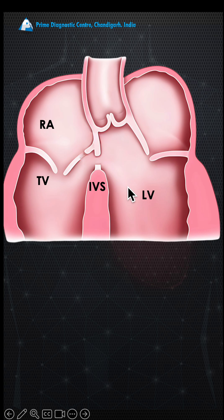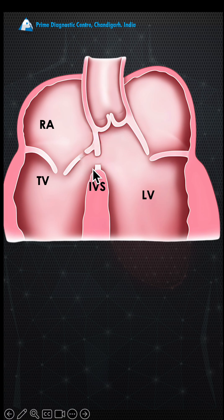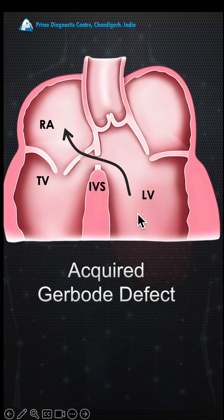In the VSD, the tricuspid valve tries to close the defect, as does the interventricular septum, producing a kind of aneurysm. Many times a small defect remains, creating a small defect in both the VSD and the tricuspid valve. This leads to a channel — what we call an acquired Gerbode defect — from the left ventricle to the right atrium.